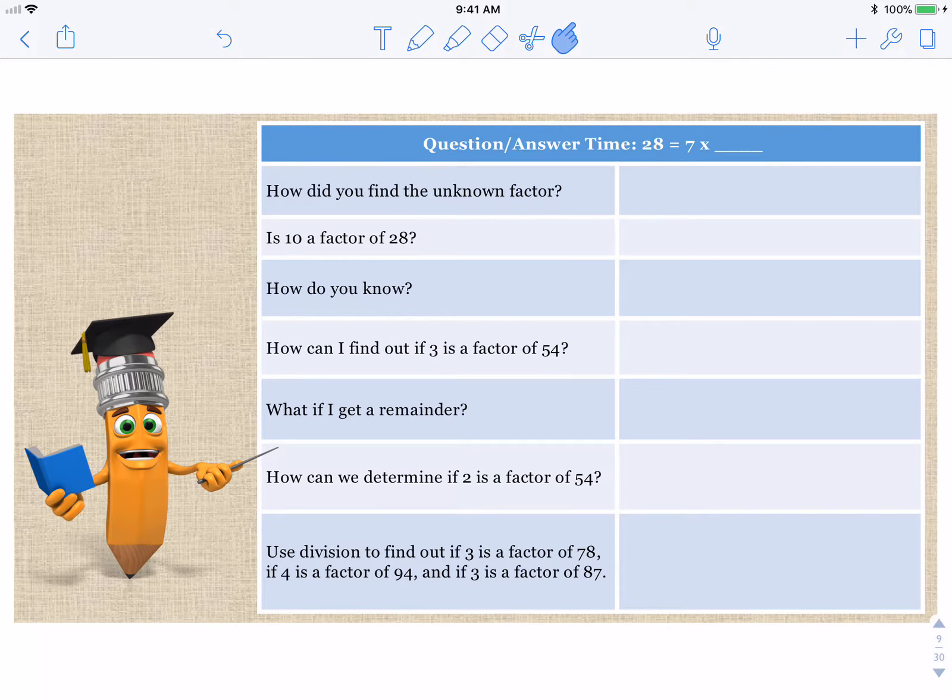Now, here's two rules we can talk about. If 2 goes into a number, the number will end in 2, 4, 6, 8, or 0. 2 goes into all those numbers. We know that 10 goes into all numbers that end in 0. We know that 5 goes into all numbers that end in 5 and 0.